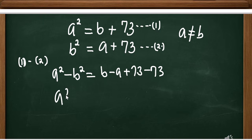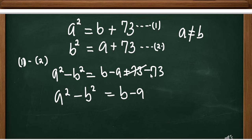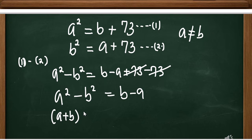So here I'm going to have A squared minus B squared equals B minus A, because 73 minus 73 is 0. Now, looking at the left-hand side, I can use the difference of two squares. Using the difference of two squares, I'm going to have A plus B, A minus B.